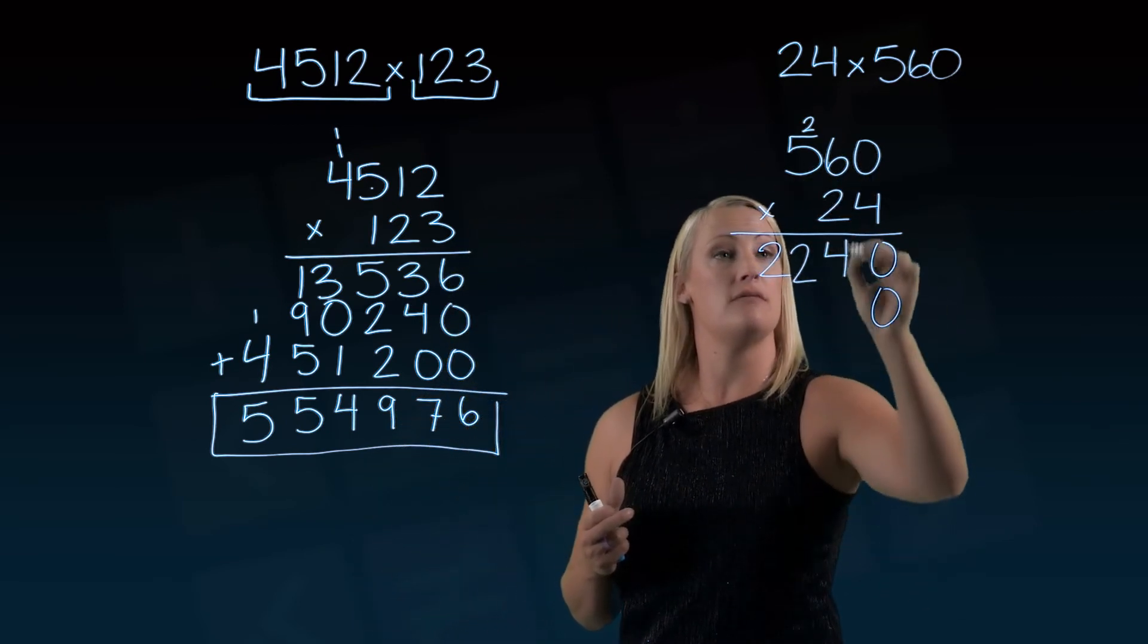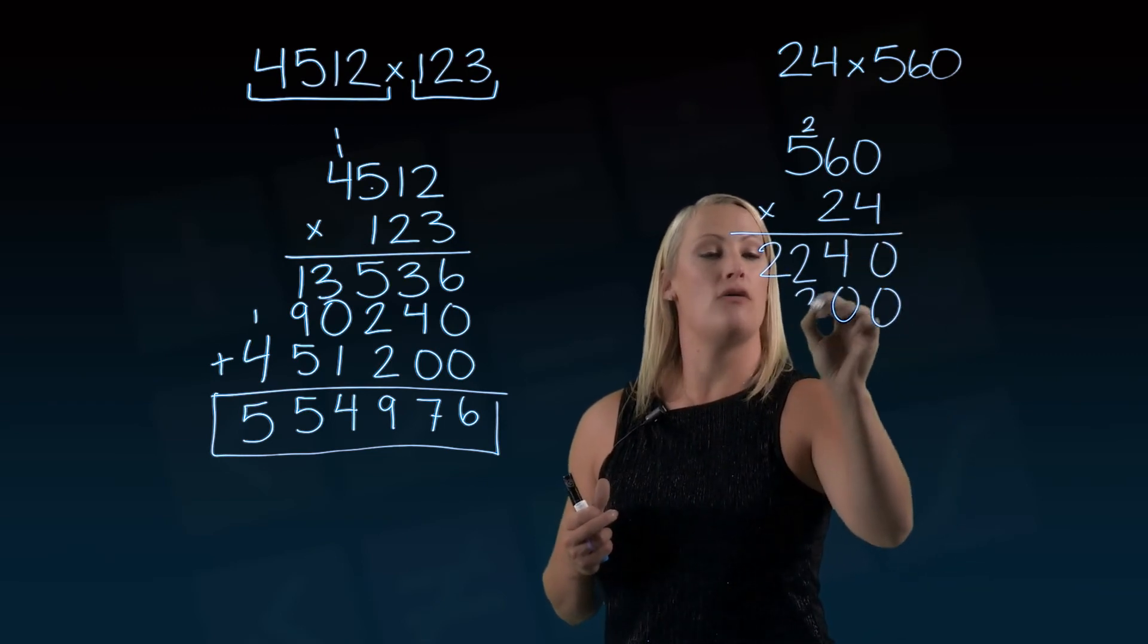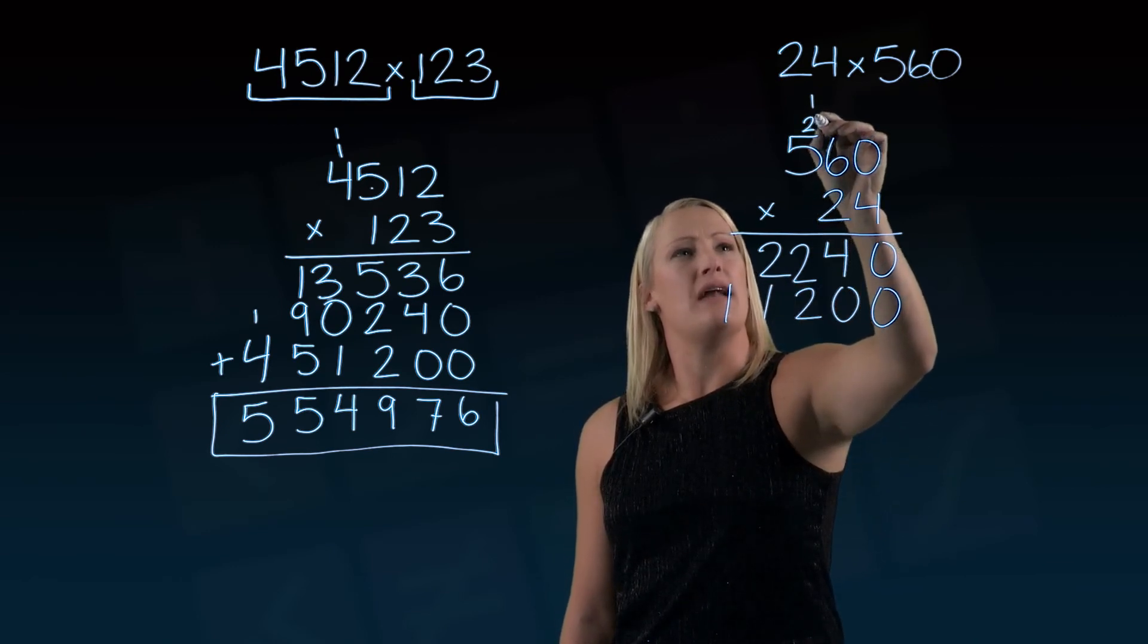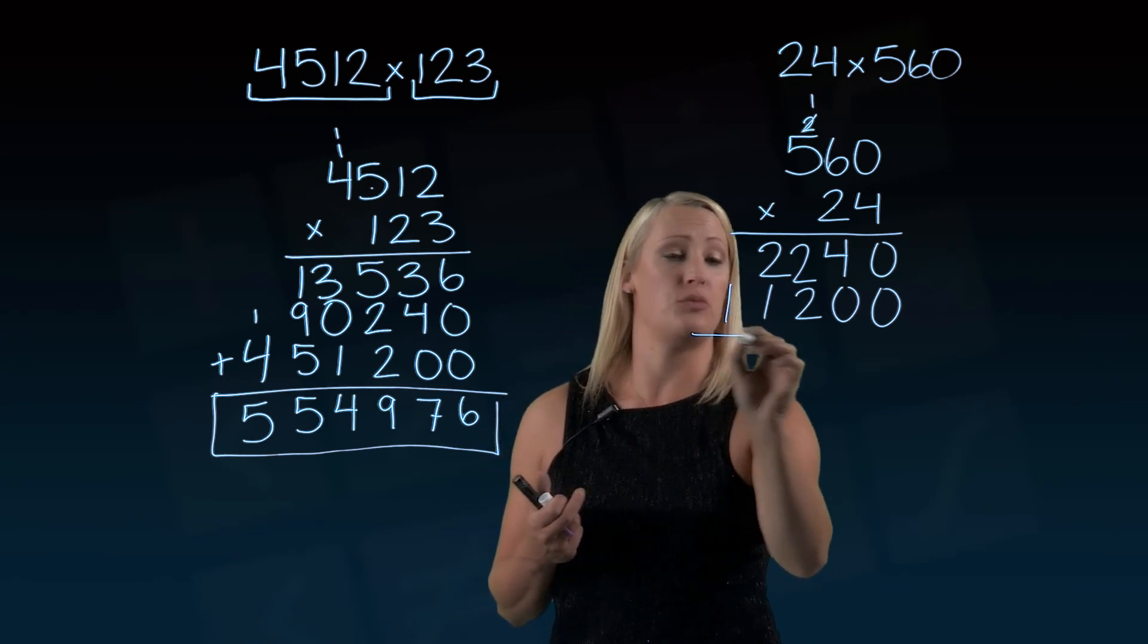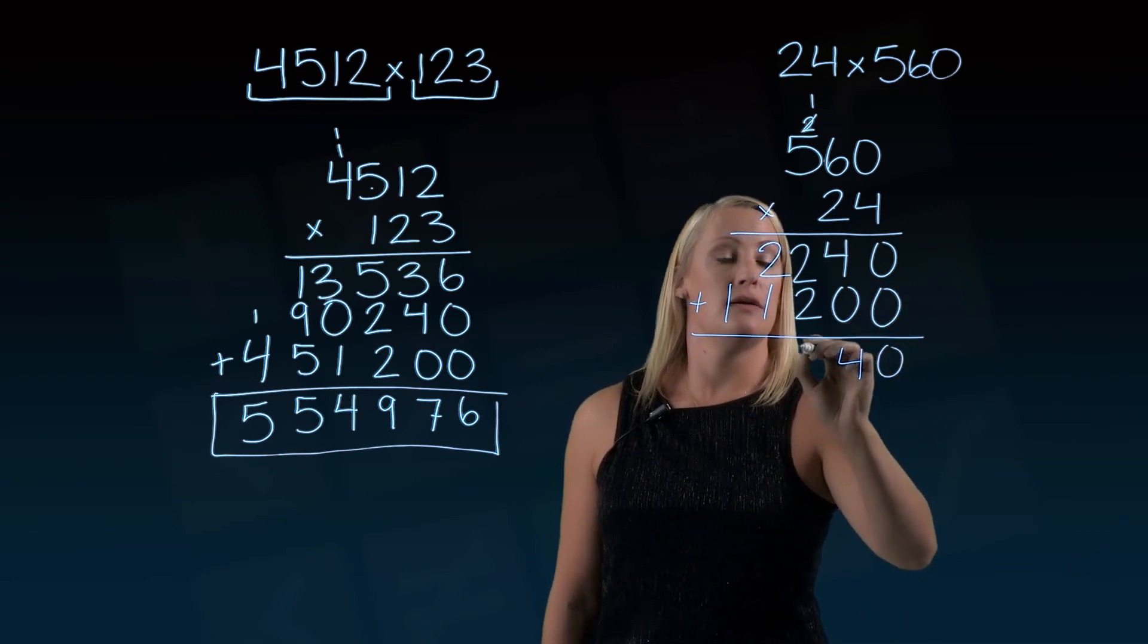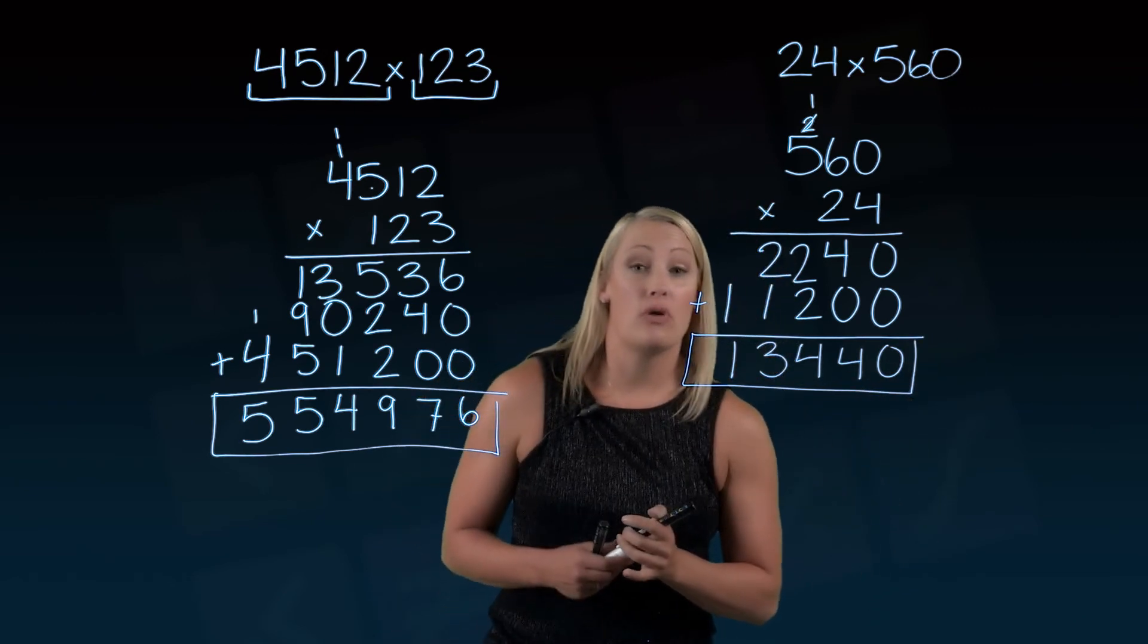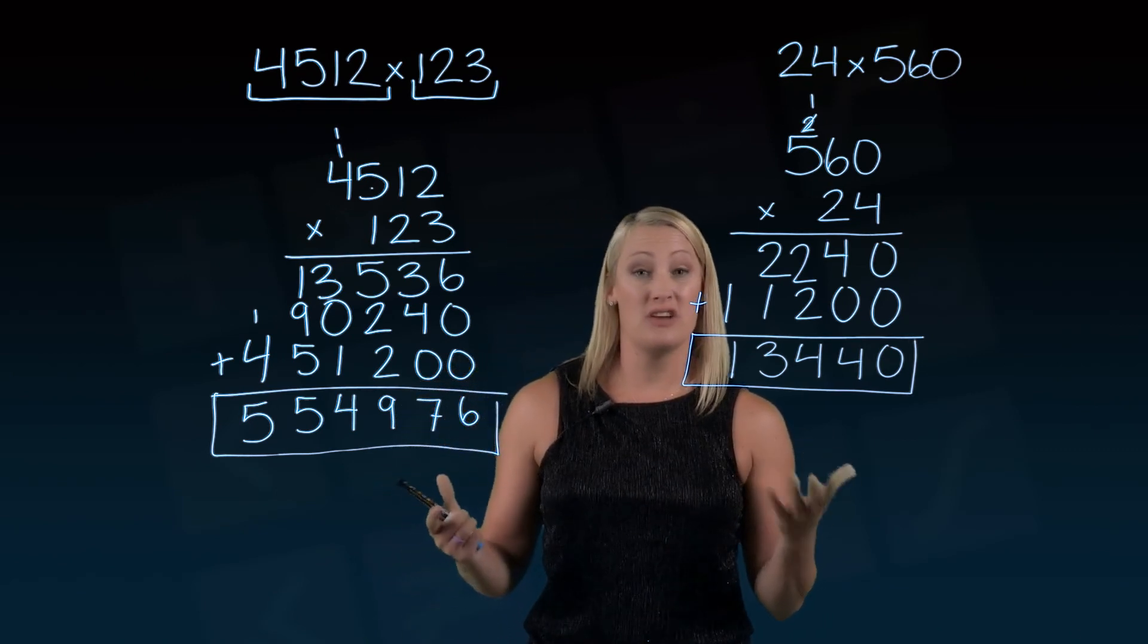Now we're multiplying 560 by 20. I'll put that 0 down. 2 times 0 is 0, 2 times 6 is 12, so the 2 goes down and the 1 goes up. 2 times 5 is 10, plus that 1 is 11. Then we add those together: 0 plus 0, 4 plus 0, 2 plus 2, 2 plus 1, and 1. Our final answer is 13,440. Hopefully that makes you feel more comfortable doing multiplication without your calculator.